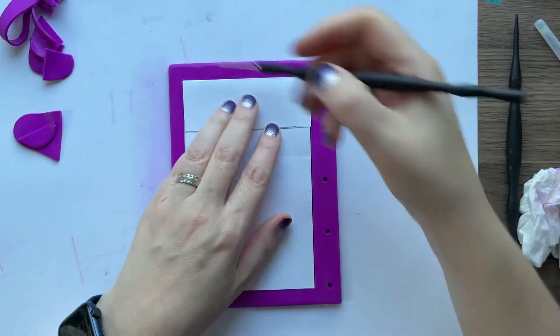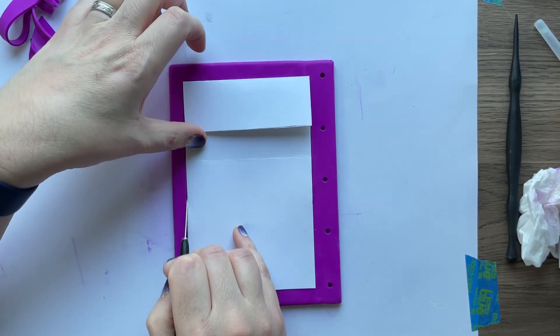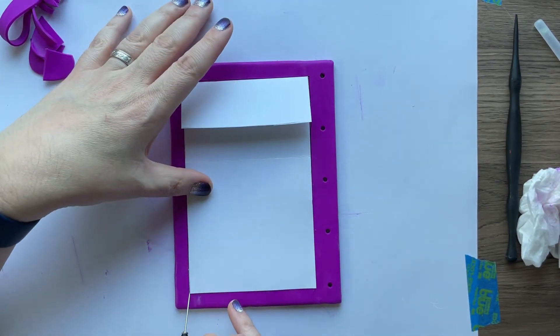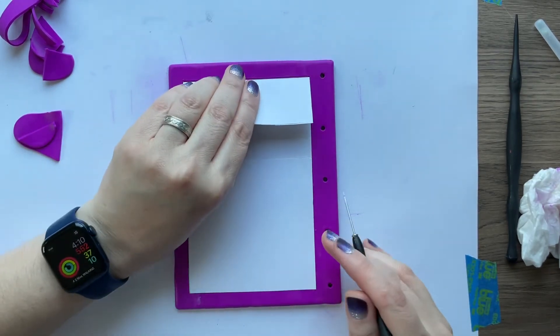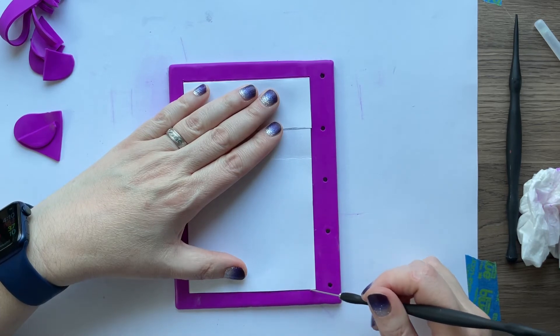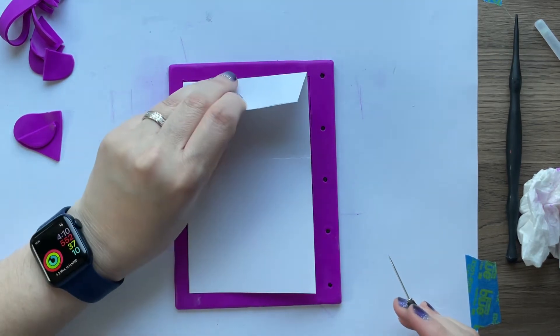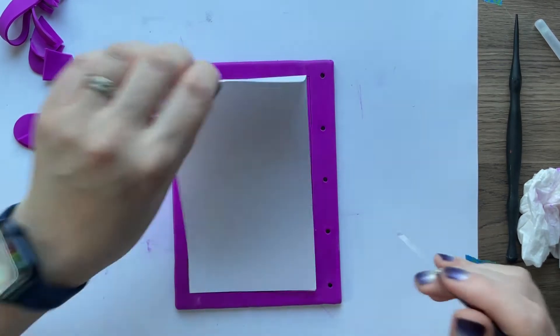And then I'm using my needle tool to gently follow the paper. Oops, don't let the paper move. So I'm gently following the paper all the way around, almost, and then I'm gonna pull off the extra.